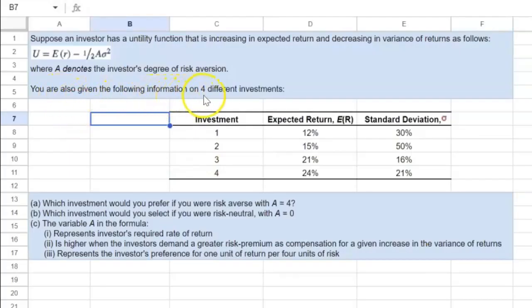Now you're also given the following information on four different investments. You're told the expected returns on those. You're also given information on their standard deviation. This is standard deviation or just sigma, whereas this is sigma squared, which is basically variance.